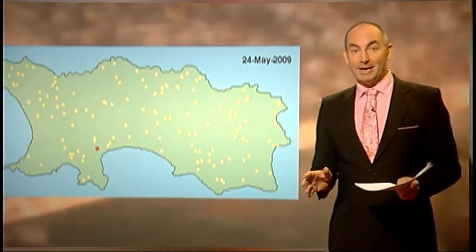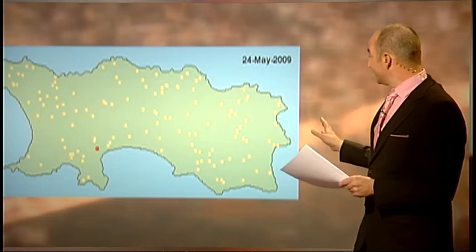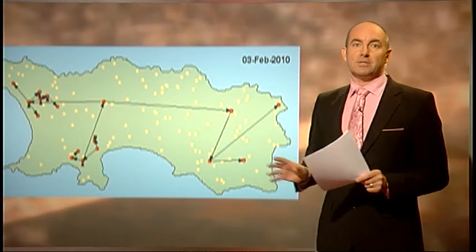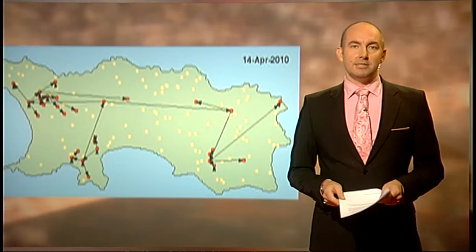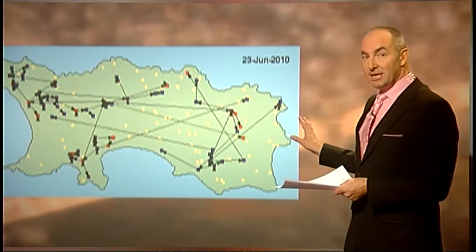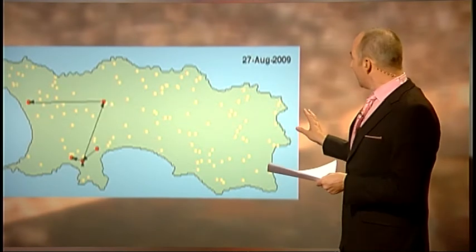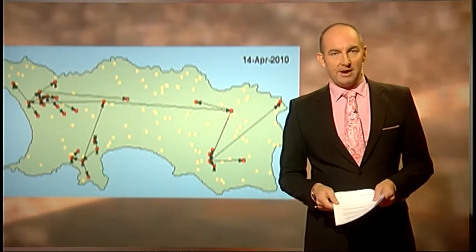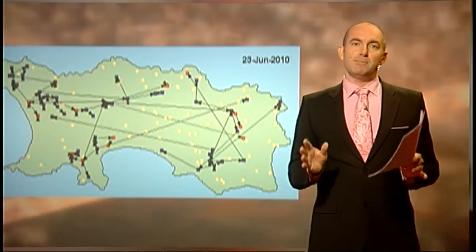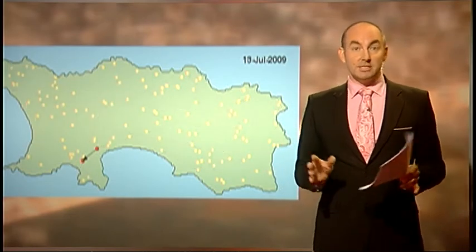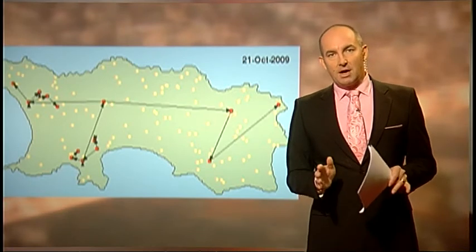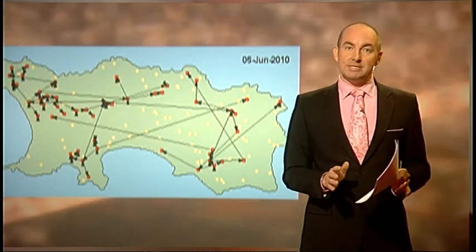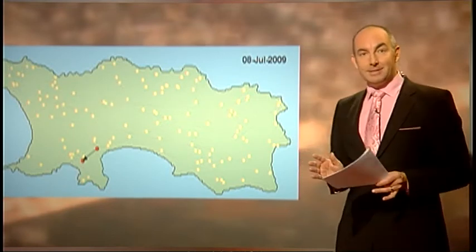It may look basic, but this is the actual computer model working. It's based on an actual outbreak on the island of Jersey, but this is a simulation. These dots are the hives, and those lines are the beekeepers moving between the hives themselves. This shows the two most important factors in the spread of the disease: how close the hives are, and the beekeepers, because they can spread the disease as they move around the island.